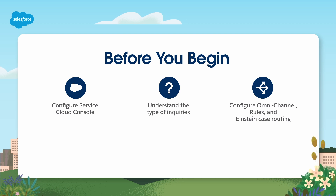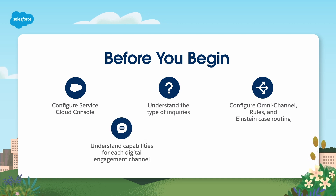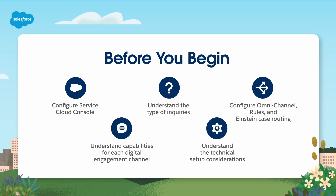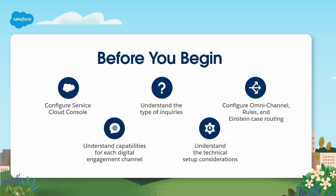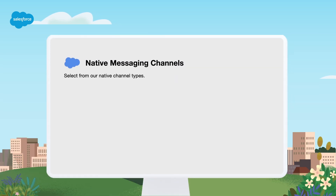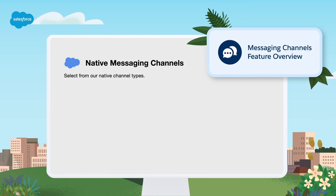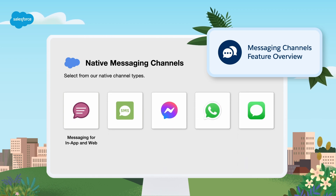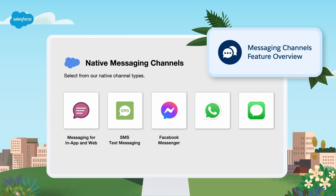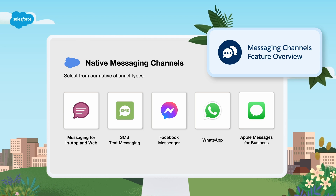For more complex needs, set up Omni-Channel flows or skill-based routing. Understand the capabilities for each digital engagement channel so you can get the right provisioning and licenses for the features you need. Understand the technical setup considerations for each digital engagement channel — we'll talk about this in more detail next. When you turn on native messaging with Service Cloud, a wide number of features are supported out of the box. You'll also want to consider adding external digital channels depending on your needs: SMS, standard Facebook or enhanced, WhatsApp standard or enhanced, and Apple for Business enhanced.